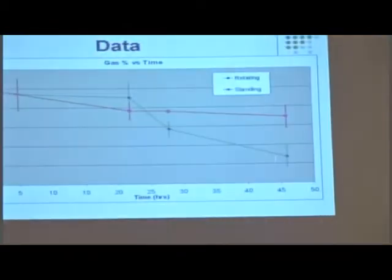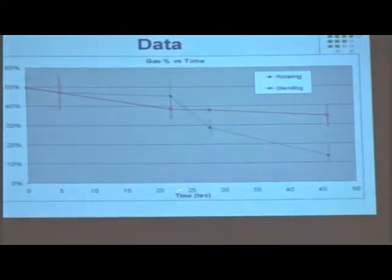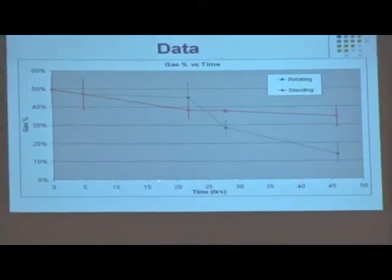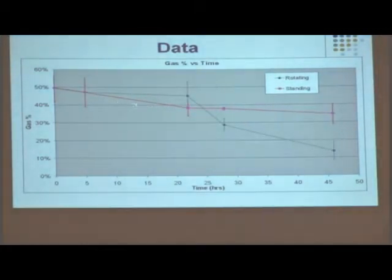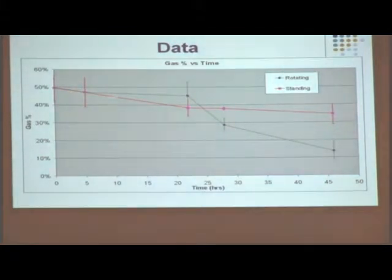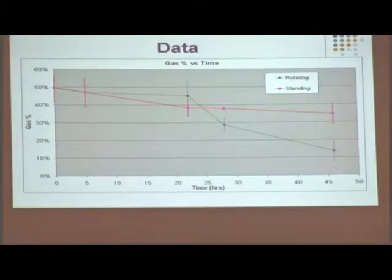We can see that the gas percentage of the marker bubbles is plotted over time in hours. To our surprise, we saw that the rotated marker bubbles, shown as the light green line, were dying off — the amount of marker bubbles was getting less and less compared to the ones left standing.